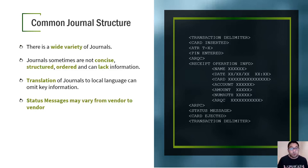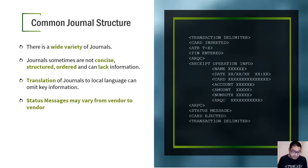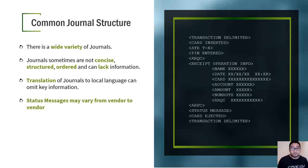The common journal structure can vary widely from vendor to vendor, from software to software, from ATM to ATM. Journals are normally not concise, structured, or ordered, and they can lack information. Even with the same ATM model, the same financial institution, and the same software, I have seen journals that are different or that have had information removed. We need to identify the key parts most important to us, regardless of these differences.